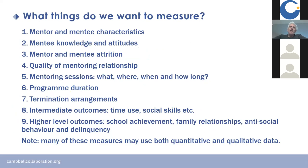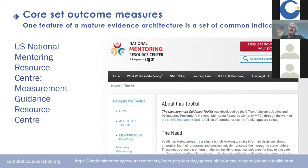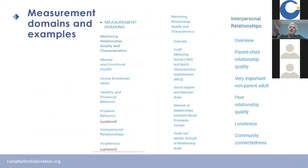Here's a list of things to measure. Number four is quality of the mentoring relationship — this is key. The US National Mentoring Resource Centre has a measurement guidance toolkit with a list of measures across a range of domains. The first domain is mentoring relationship quality, and there are a number of questionnaires to measure it. One of my concerns is how badly measurement is done in most surveys. A question like 'My mentor is someone I can trust — yes, maybe sometimes, no, never' is just useless. Asking 'Rate trust in your mentor on a scale of 1 to 10' is even more useless because it gives a sense of false accuracy.